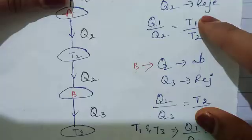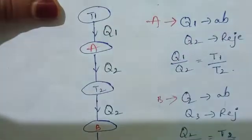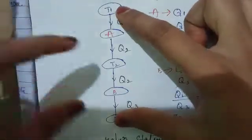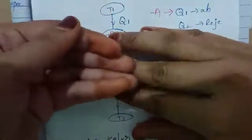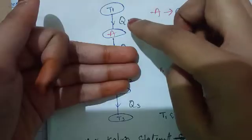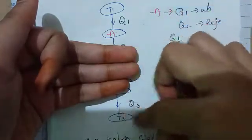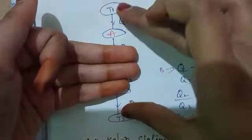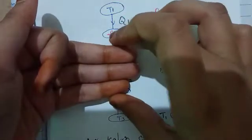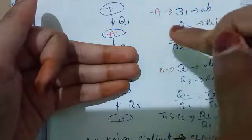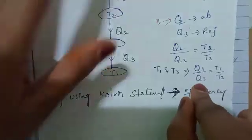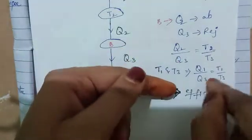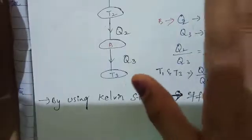From these two equations, we consider a complete combined system working between T1 and T3 only, where Q1 energy is absorbed and Q3 energy is released. So for this complete system, Q1 by Q3 is equal to T1 by T3.